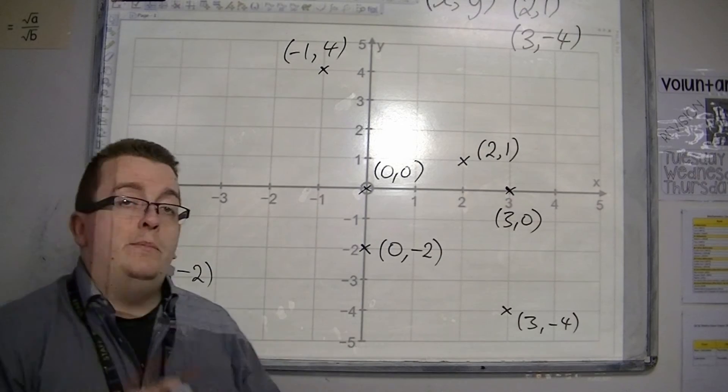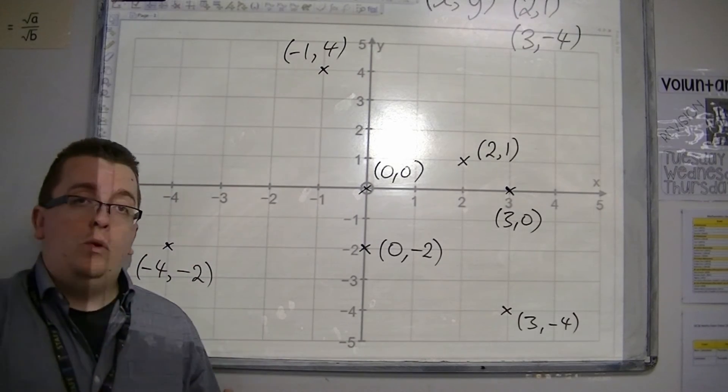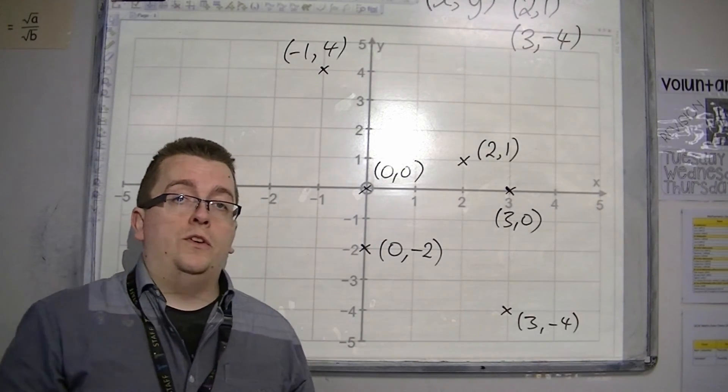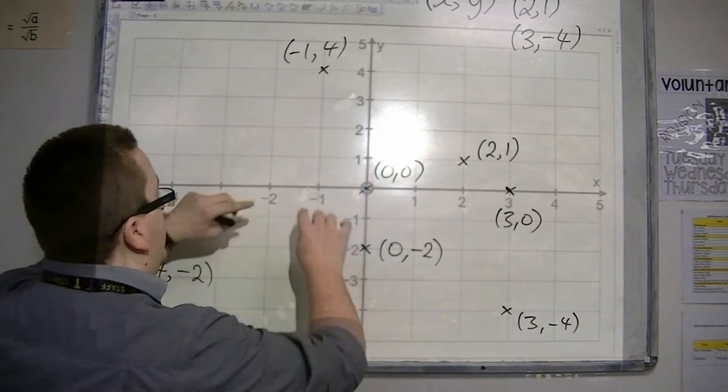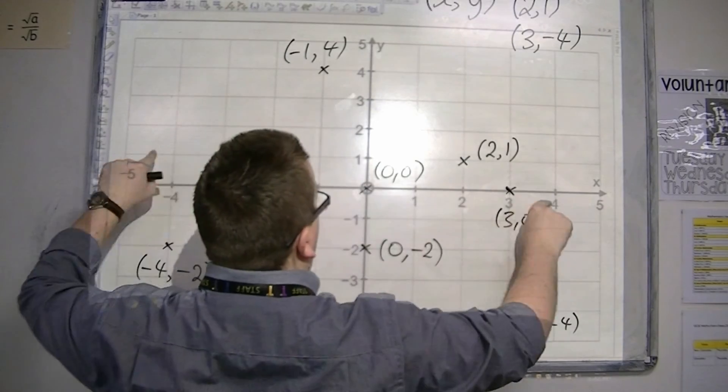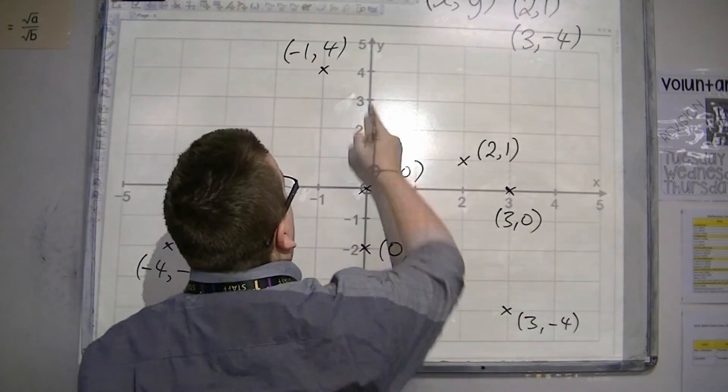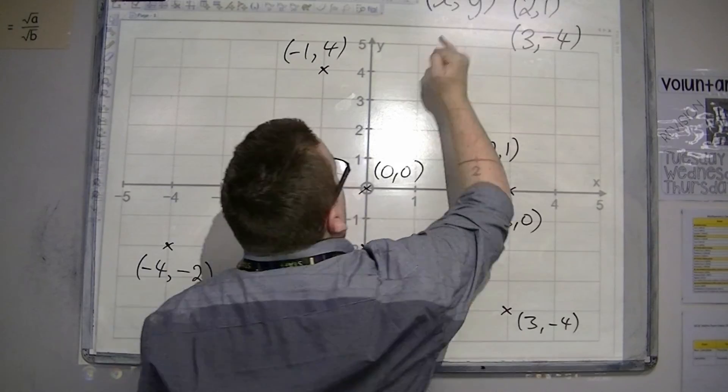So you need to be able to plot points given the coordinate. And you need to be able to read off the coordinates given the point. So make sure you identify that it's the horizontal axis first and then the vertical axis. So the x, then the y.